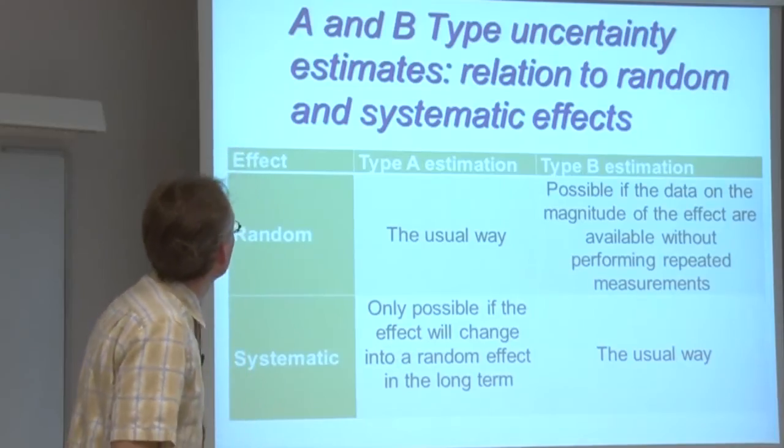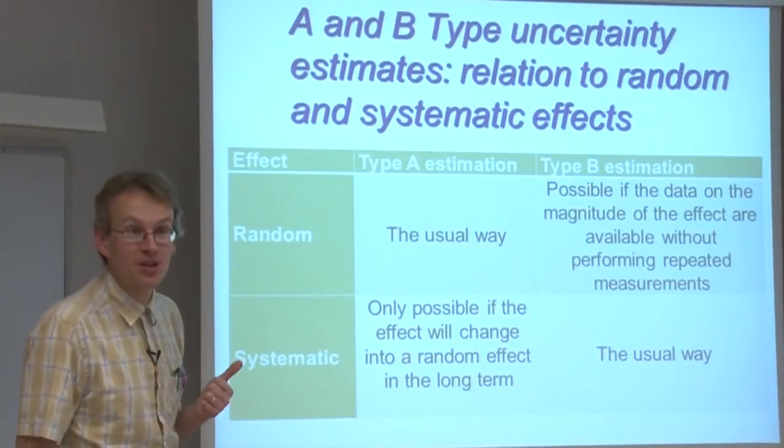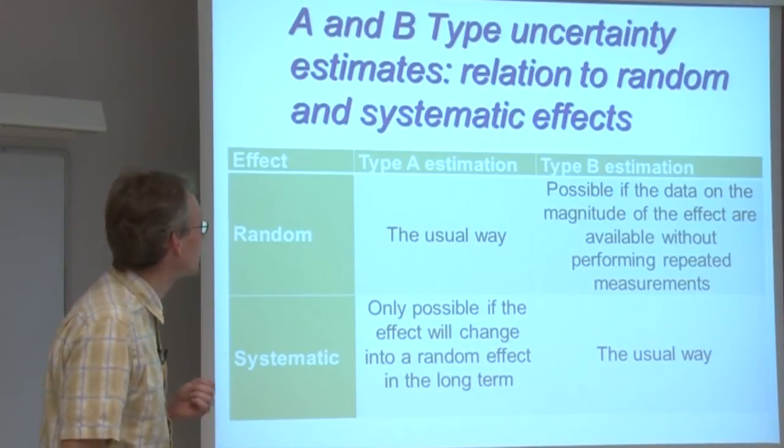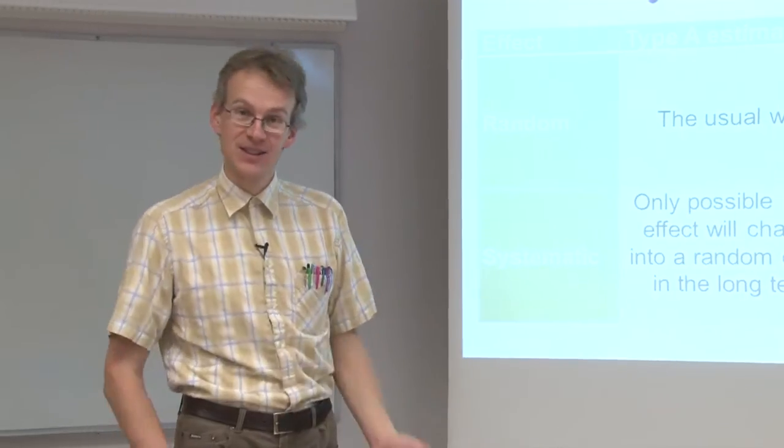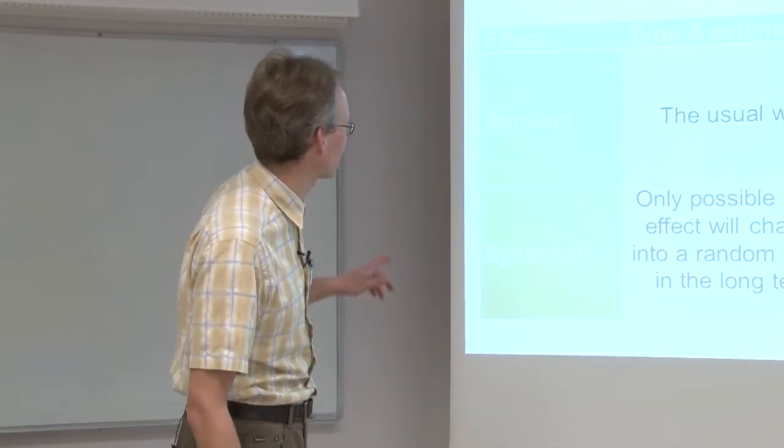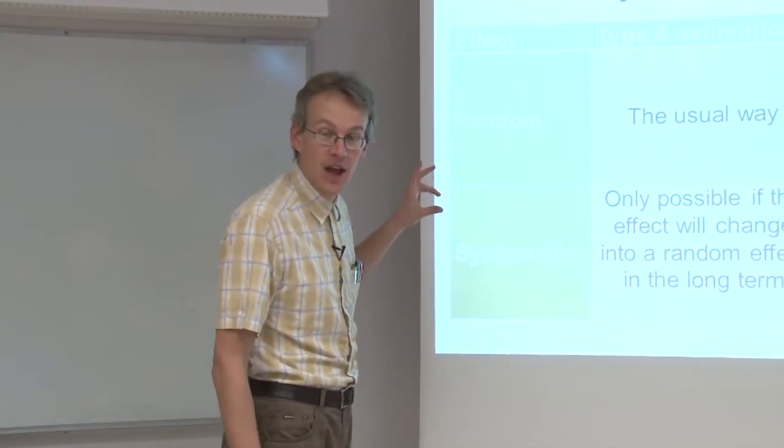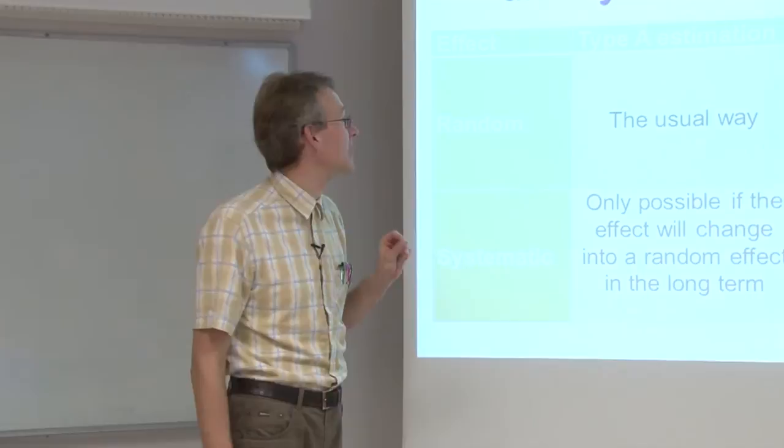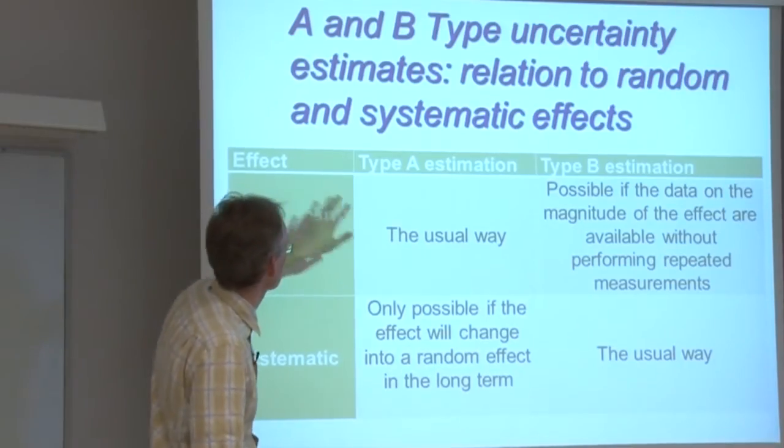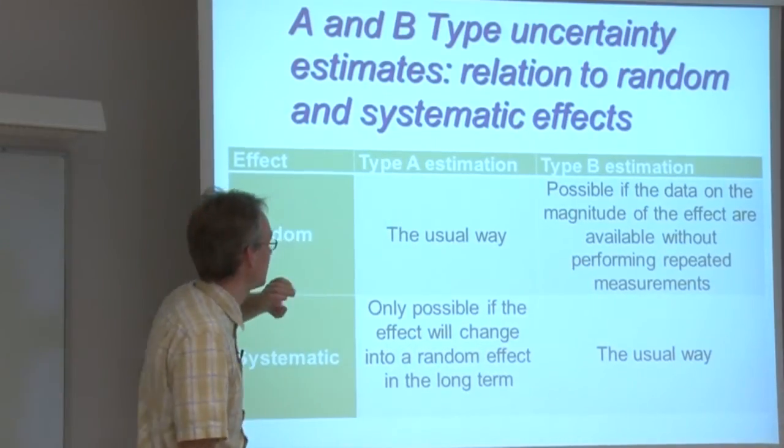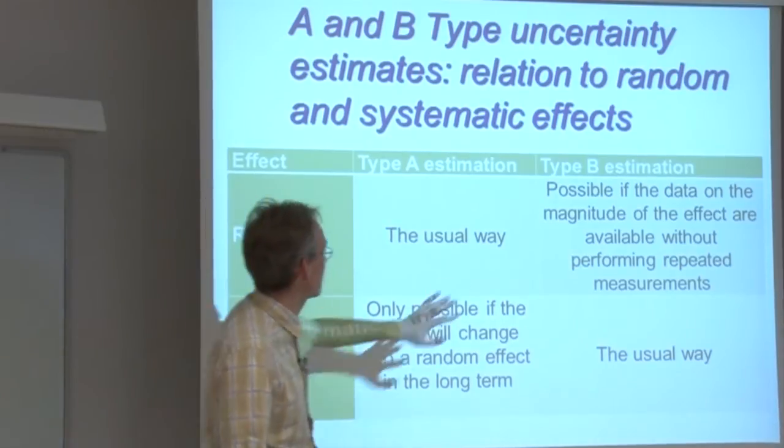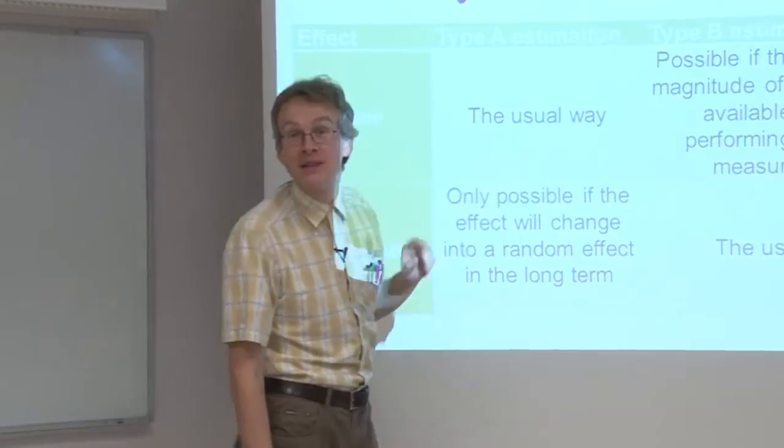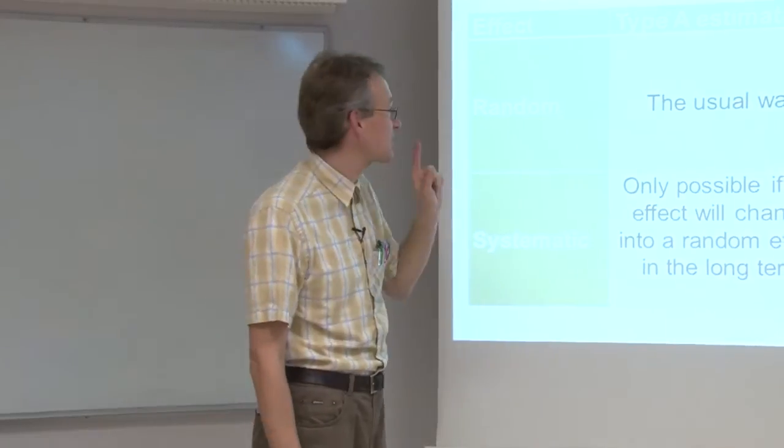How do A-type and B-type uncertainty estimates relate to the random and systematic effects that we have looked at? There is a relation and there are some similarities between random effects and type A uncertainty estimation, systematic effects and type B, but these things are not synonymous.